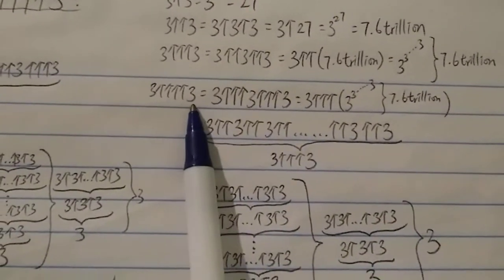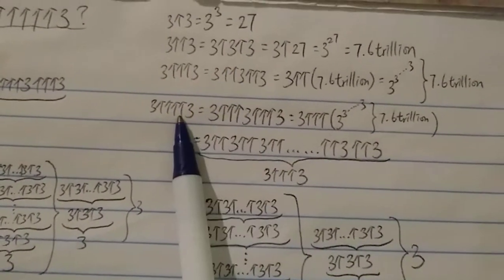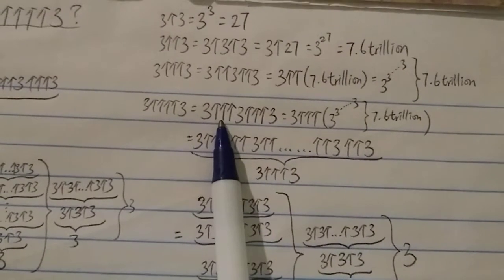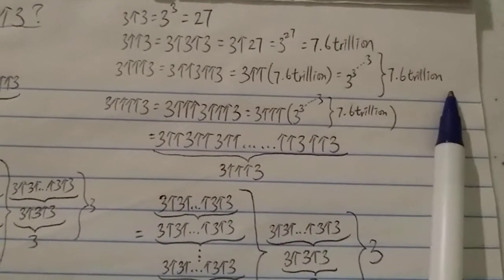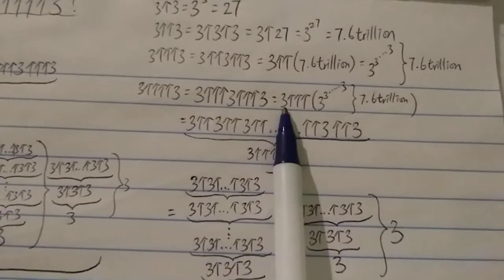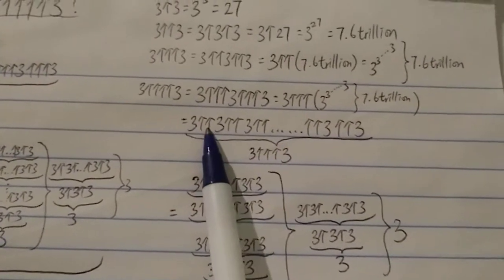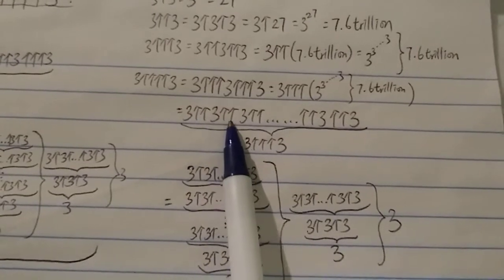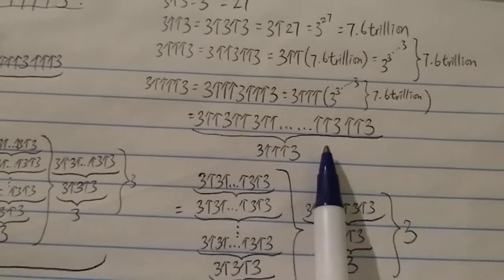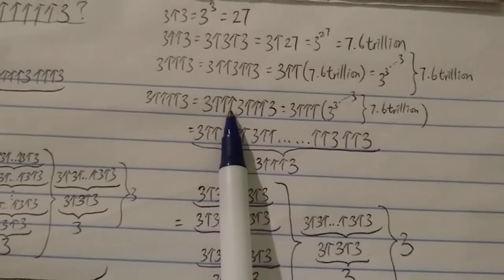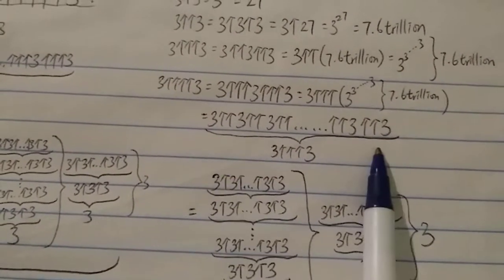Now let's look at three four-arrows three, which is G1. This is unimaginably bigger than three triple-arrow three. You can break it down: it becomes three triple-arrow three triple-arrow three, which equals three triple-arrow of that big number. If you want to break it further down to double arrows — and double arrow means power tower — it becomes three double-arrow of three, double-arrow three, double-arrow three, double-arrow three, and so on, for three triple-arrow three number of threes. You take one arrow away and the ending number becomes the count of threes.